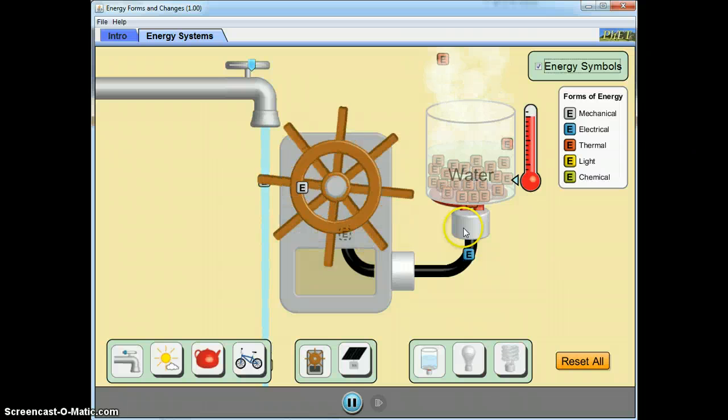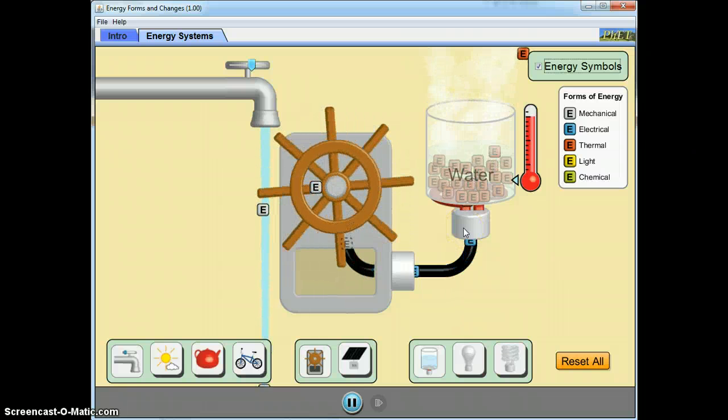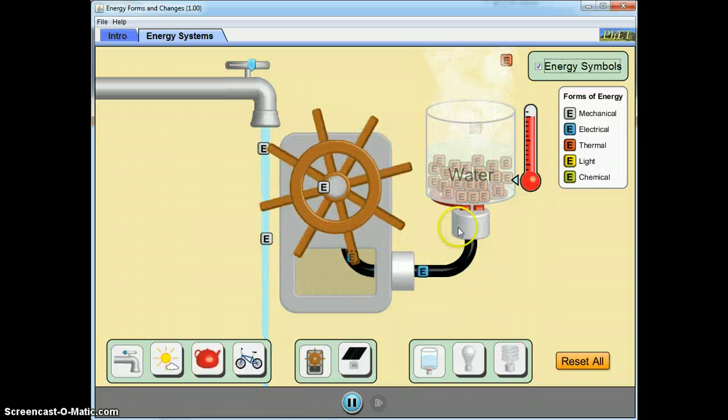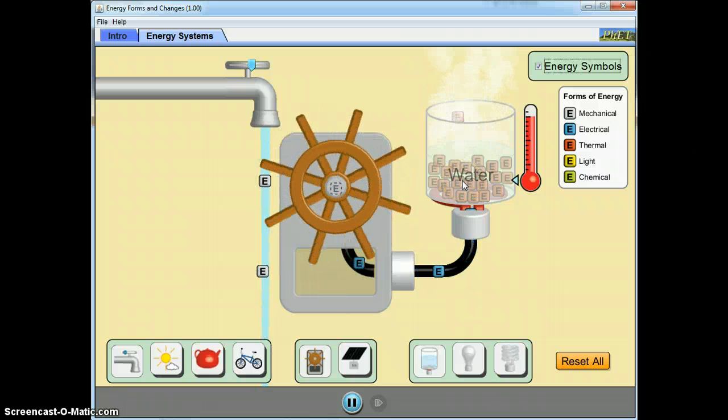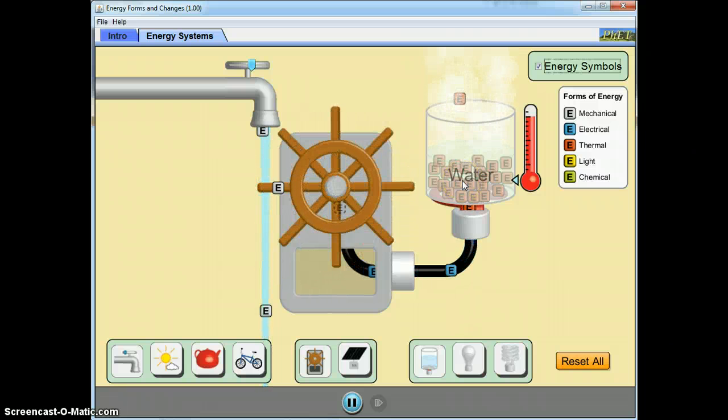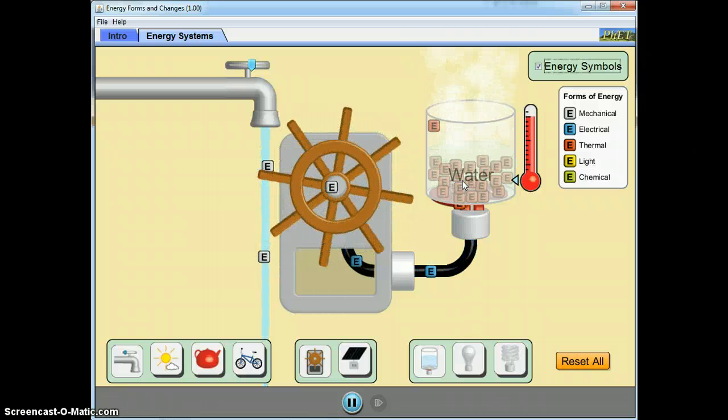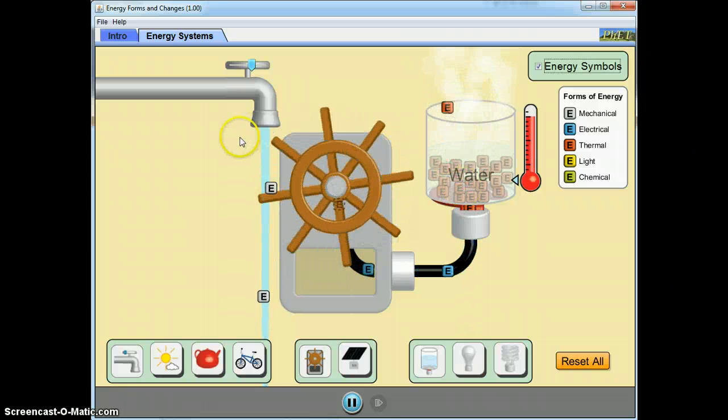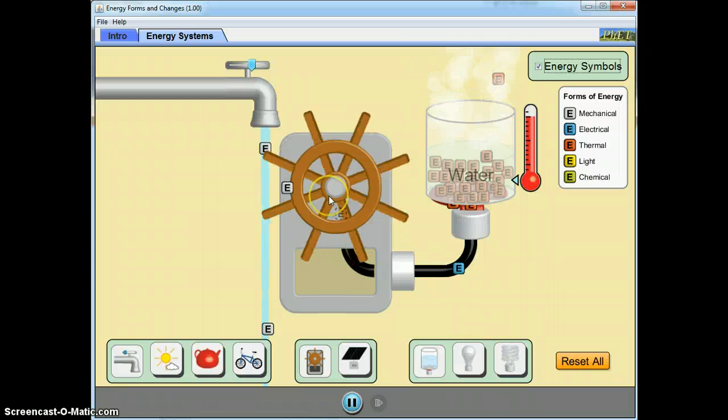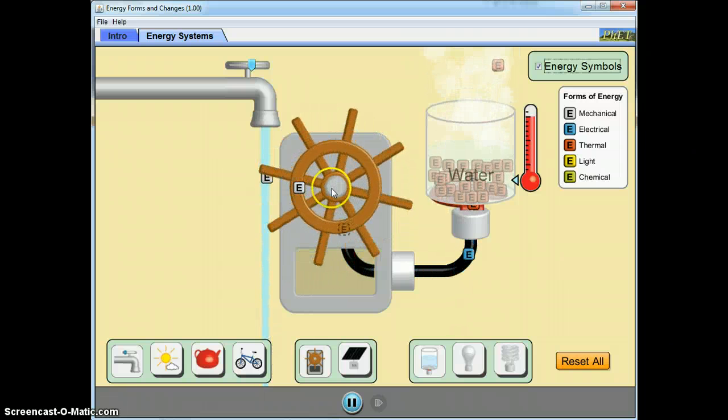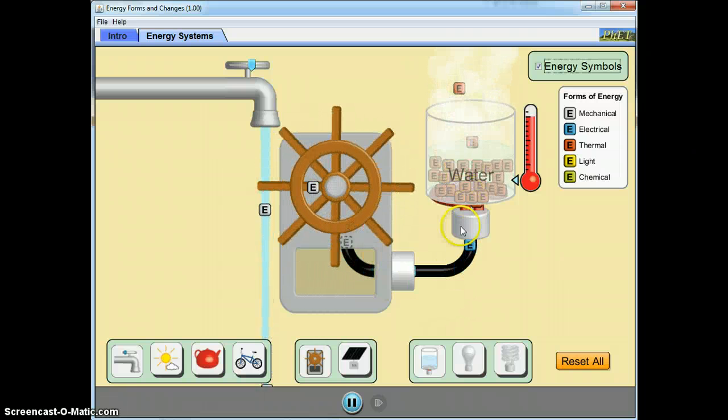The electrical energy, in turn, is then again transformed, because it's changing the type of energy into thermal energy. So we have here three types of energy that are being either, in this case, one that's being transferred. Both are mechanical energy. These two are being transformed.